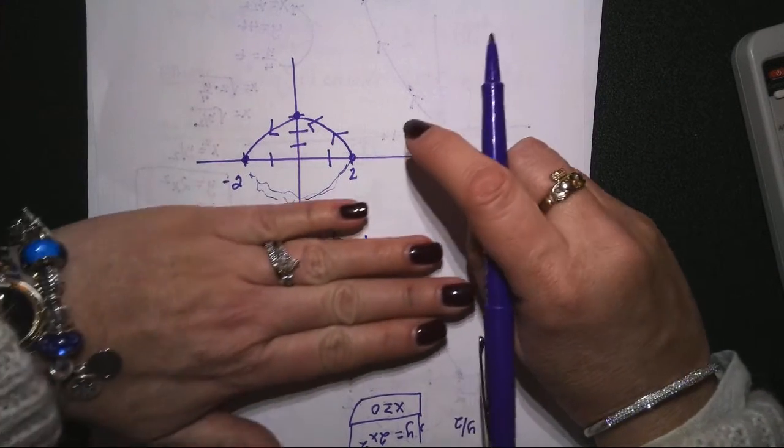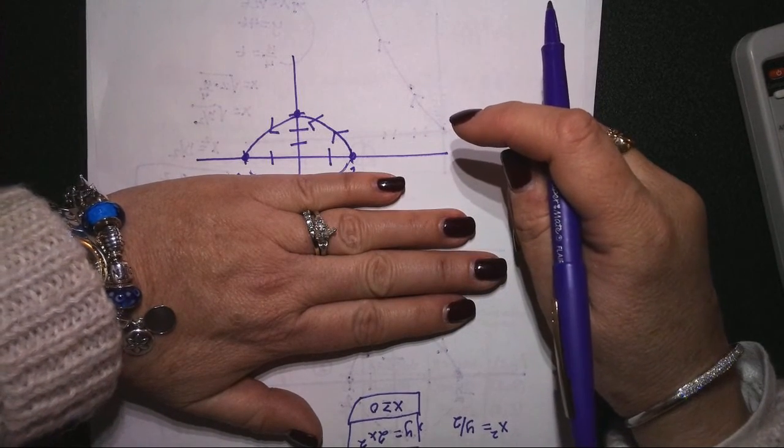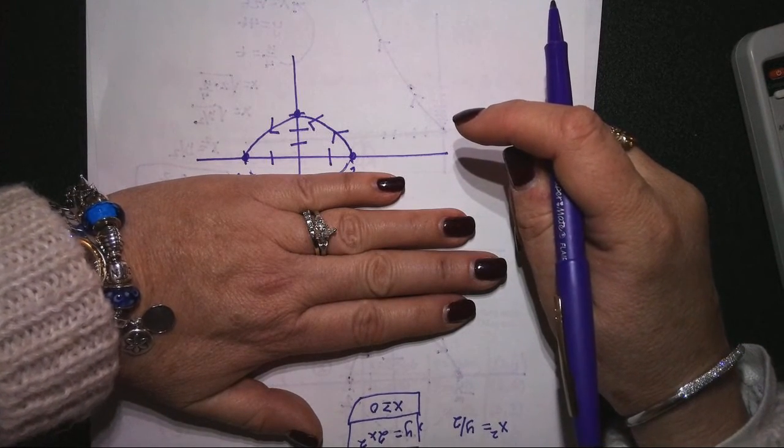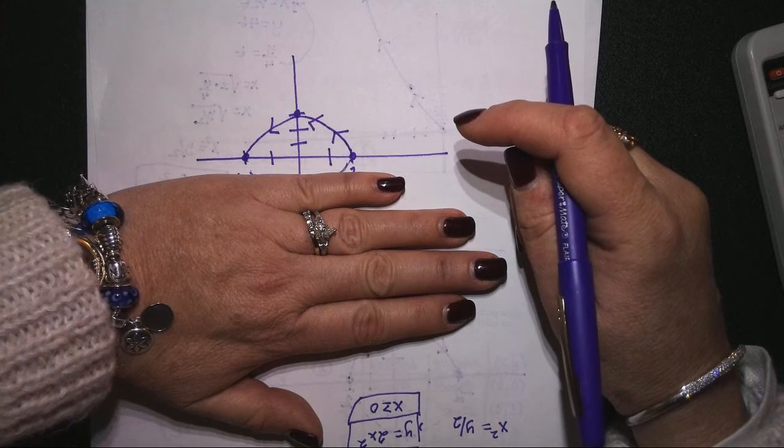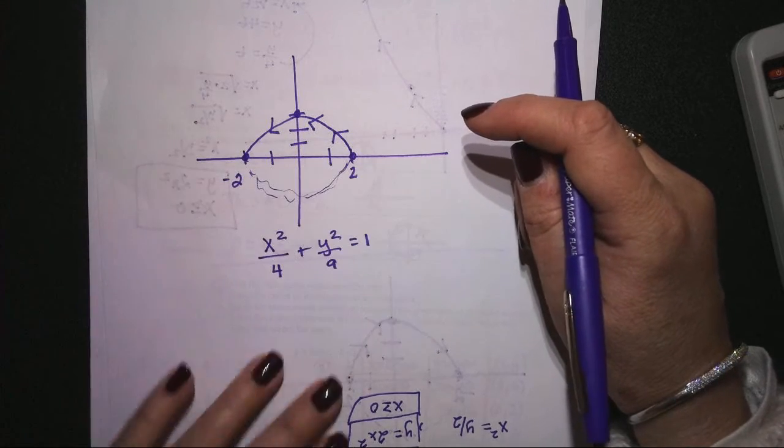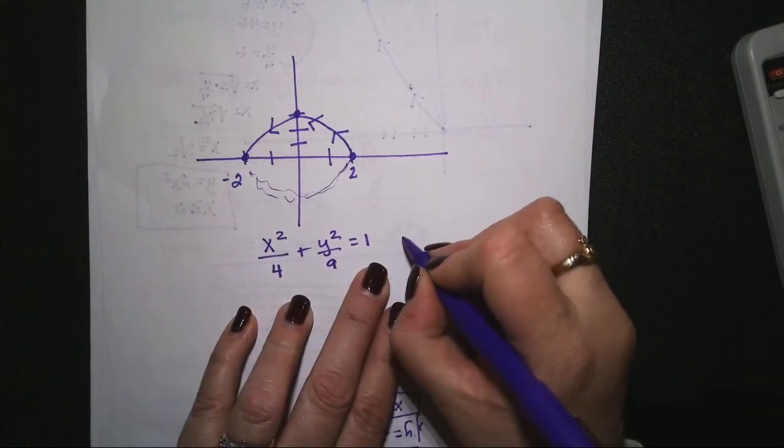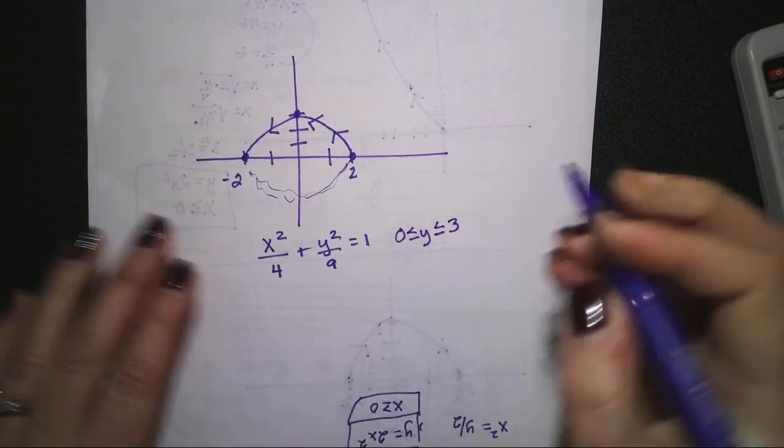So to assure that I'm only looking at the top half of the circle, instead of restricting the domain, I'm going to have to restrict the range. So if you're only seeing the top half or the bottom half of the circle or the ellipse, you need to restrict the range versus the domain. So the range restriction on this rectangular equation is going to be from 0 less than or equal to y, less than or equal to 3.